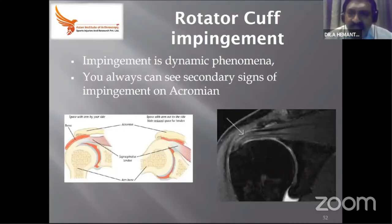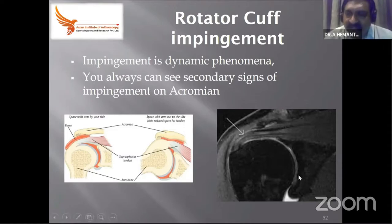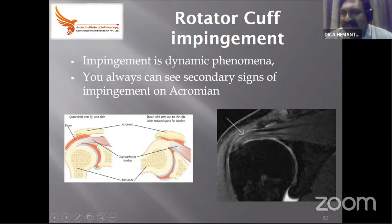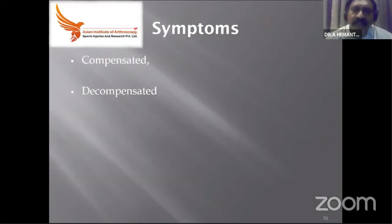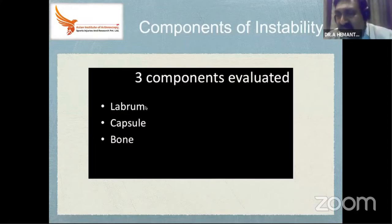The most common question involves impingement — the acromion impinging on the humeral head. On MRI we see a delaminated tendon and an impingement sign from the acromion. We normally see secondary signs of impingement; since MRI is not dynamic, we should not be too enthusiastic to say impingement is seen — rather say secondary signs of impingement are seen. The shoulder may be compensated or decompensated. Even though we see a lot of tears, they may not all present clinically, due to compensation by deltoid and pectoralis major.